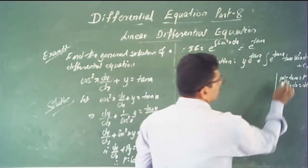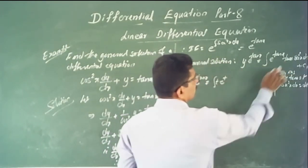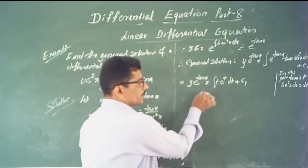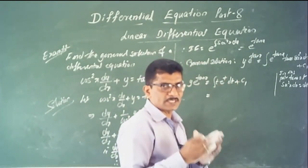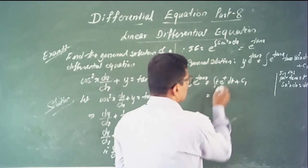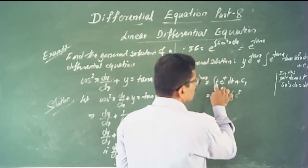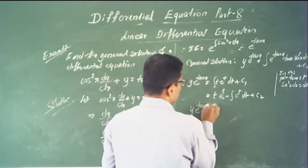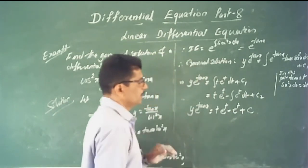Integrate ∫t · e^t dt using integration by parts — the algebraic function t is the first function and e^t is the second. Result: t · e^t − ∫e^t dt = t · e^t − e^t + C₂. Therefore y · e^(tan x) = t · e^t − e^t + C. Substitute back t = tan x: y · e^(tan x) = tan x · e^(tan x) − e^(tan x) + C.